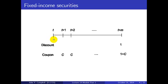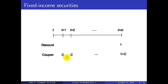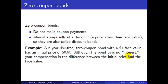Here's a timeline starting at the present and looking forward into the future. We have T plus 1, T plus 2, and so on out to T plus M. Little M here is used to indicate the maturity date. A discount bond makes only a single payment — nothing happens all the way through, and then it makes a single payment of $1 at the maturity date. The coupon bond, on the other hand, will pay C each period up to and including the maturity date.